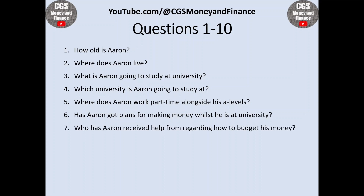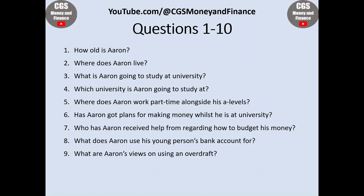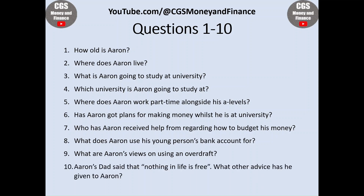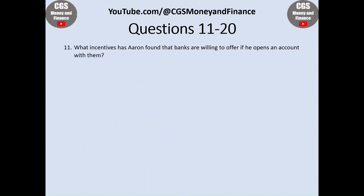Question seven: who has Aaron received help from regarding how to budget his money? Question eight: what does Aaron use his young person's bank account for? Question nine: what are Aaron's views on using an overdraft? Question ten: Aaron's dad said that nothing is free in life — what other advice has he given to Aaron? Question eleven: what incentives has Aaron found that banks are willing to offer if he opens an account with them?